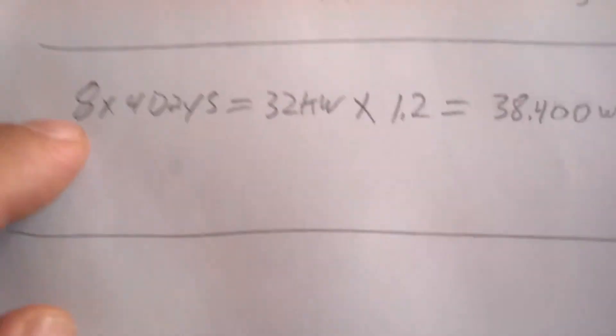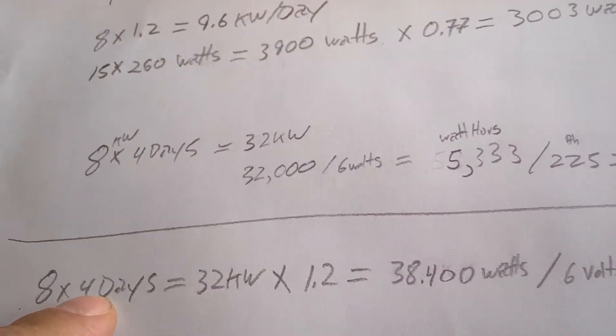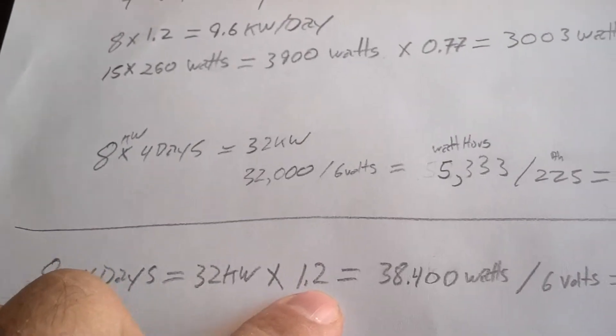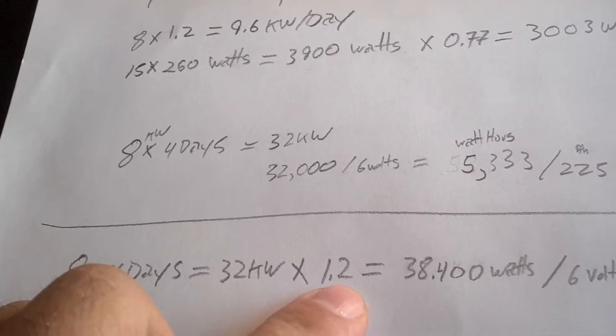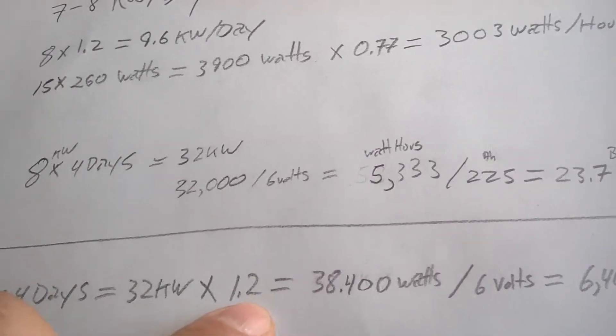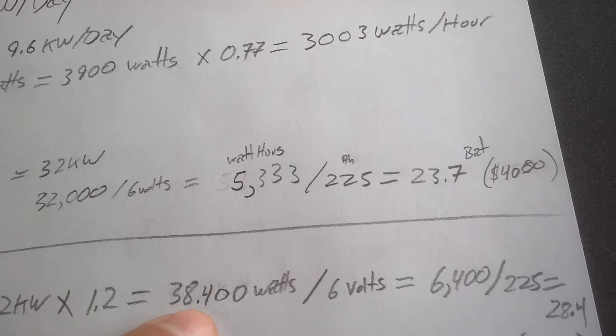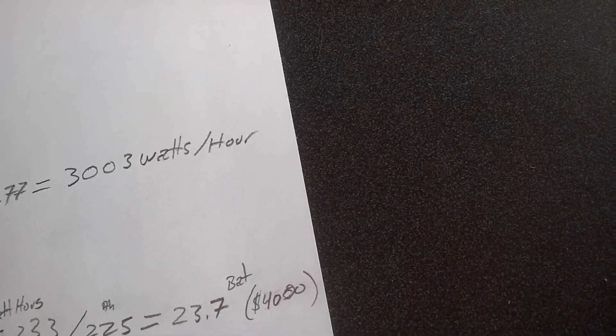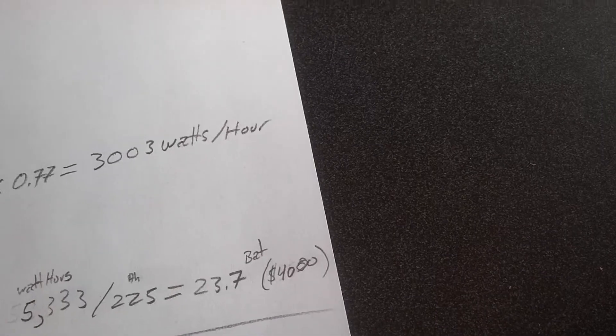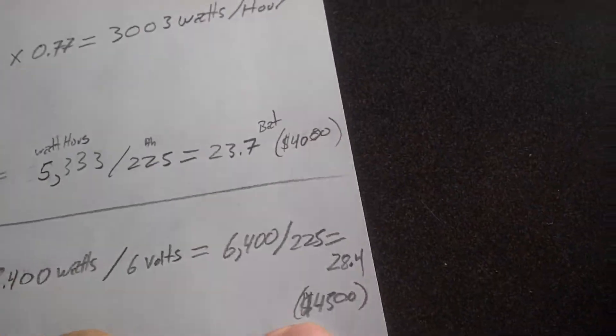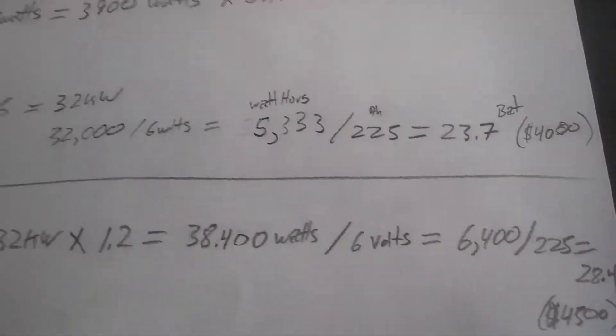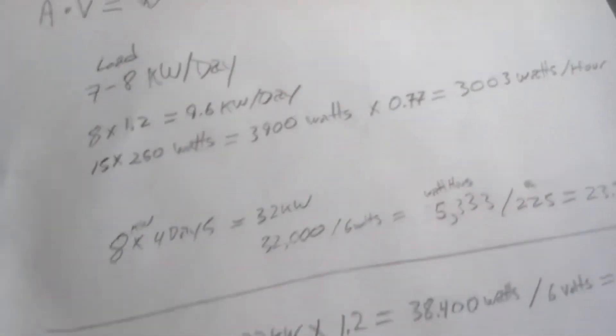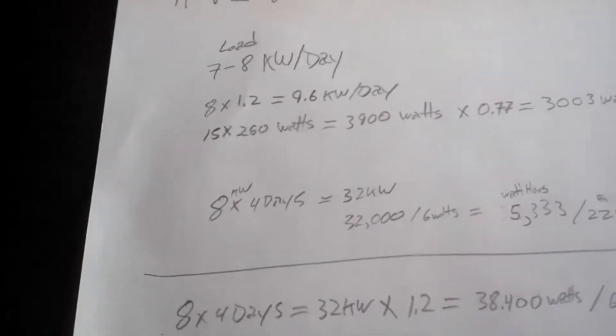So what we really have to do is do the same thing here, where we go 8 kilowatts times four days equals 32 kW, but then we have to multiply it by 1.2 for that 20% loss that we lose going from the charge controller into the batteries, then out of the batteries, back into the inverter, and then to the appliance. So we come up with 38,400 watts divided by 6 volts, 6400 divided by 225 amp hours, comes out to 28.4, or call it 29 batteries. So now we're talking $4,500. You say, well, that's not bad. Well, here's where it gets really bad. This is all assuming that you get a full battery and you run it flat dead, which for these types of batteries are the worst things that you could do, probably for almost any type of battery. But anyway, for these we know that to be the case, that that's a really terrible thing.